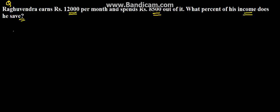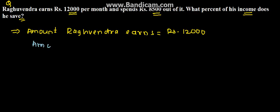So we need to find what percent of income Ragu Vendra saves. So here we can begin with the solution. The amount Ragu Vendra earns is given to be rupees 12,000, and the amount he spends is given to be rupees 8,500.